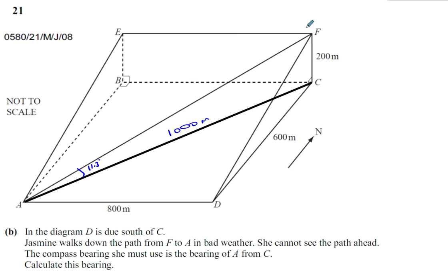Jasmine walks down the path from F to A in bad weather. She cannot see the path ahead. The compass bearing she must use is the bearing of A from C. Calculate this bearing. So we've got to draw the north line.